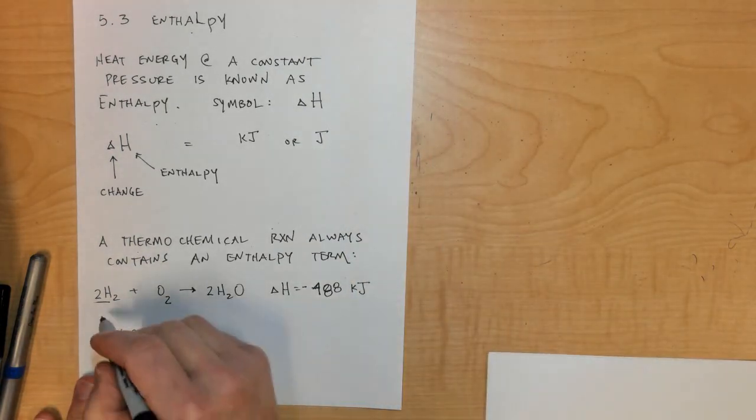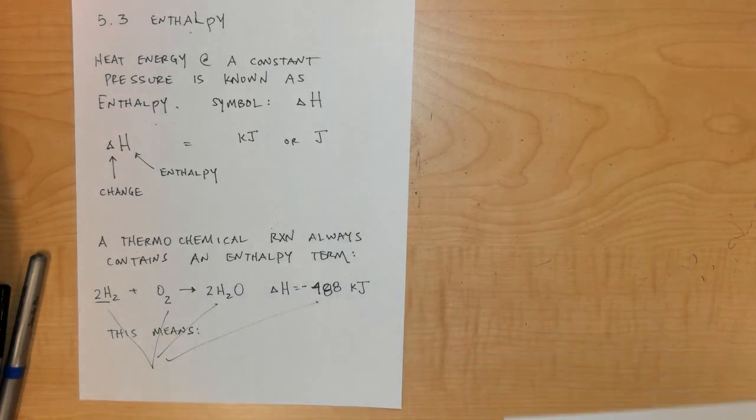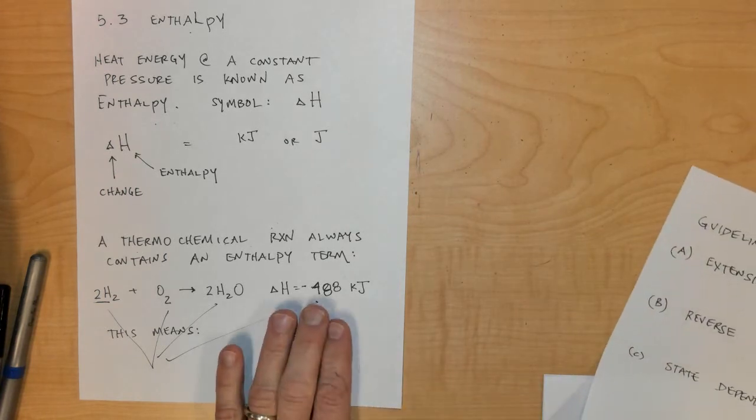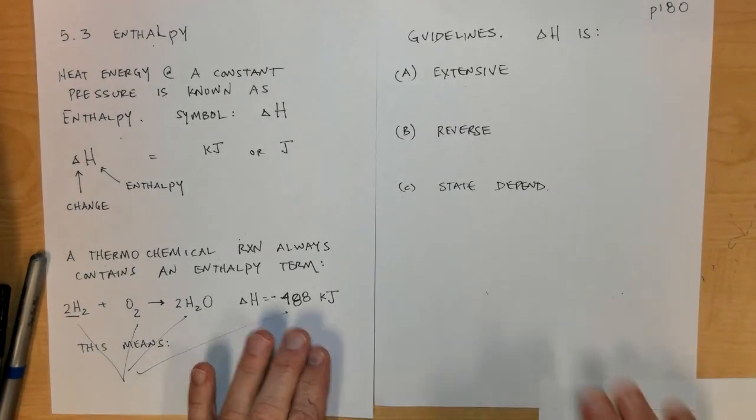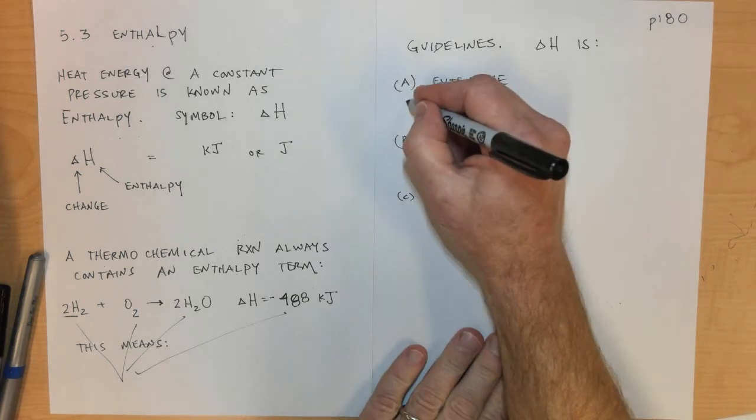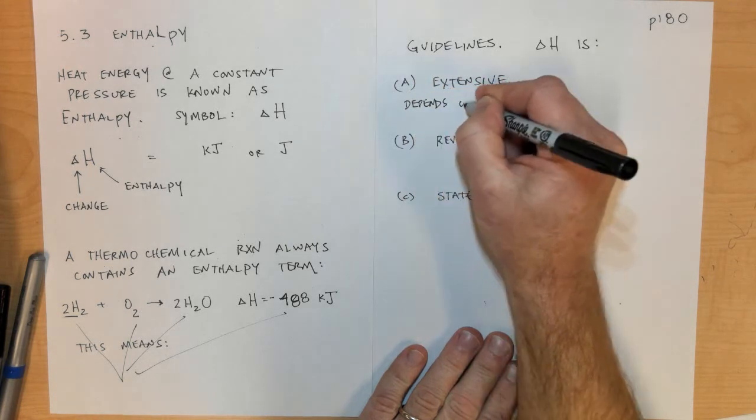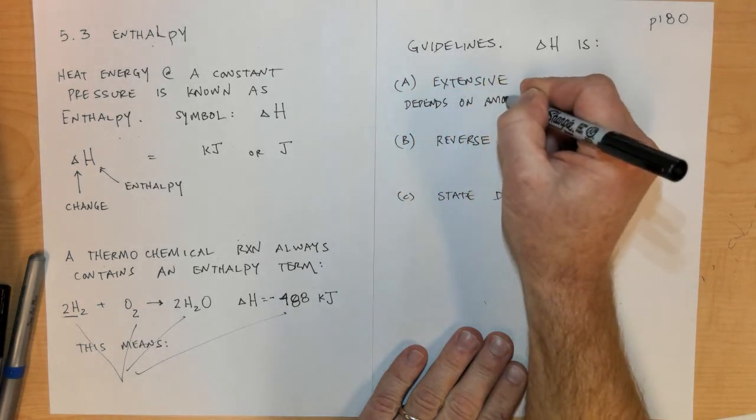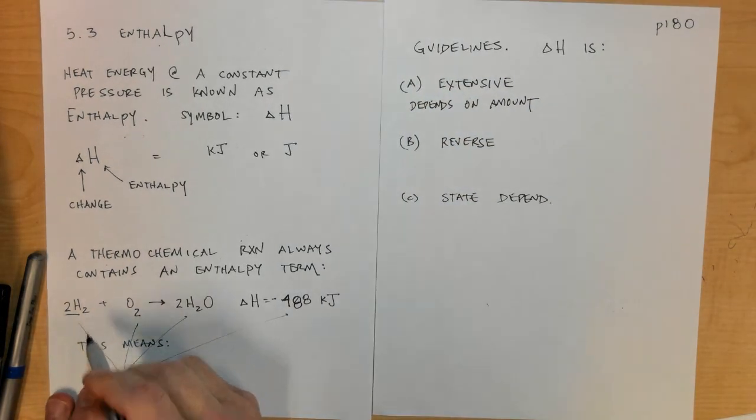Some guidelines for delta H: First, enthalpy is an extensive property of matter. That means it depends on the amount of substance that you have. In this equation, if we only had one mole of hydrogen, half a mole of oxygen, and one mole of water, the enthalpy would be half as much.